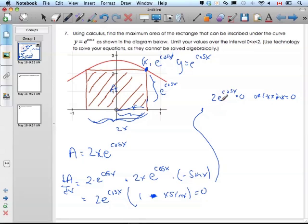This exponent will never be 0, so I can ignore that equation. My equation comes down to solving 1 minus x sine x equals 0. It gives me a hint to use technology to solve this equation as it can't be solved algebraically.